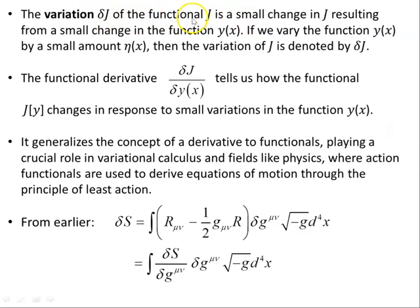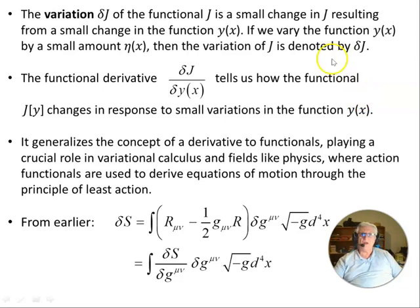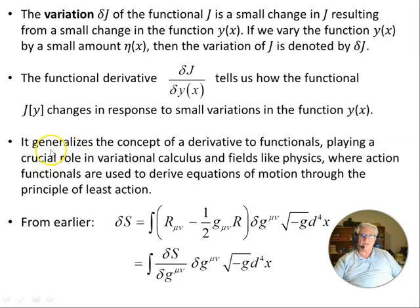The variation δJ of the functional J is a small change in J resulting from a small change in the function y(x). If we vary y(x) by a small amount, the variation of J is denoted by δJ. The functional derivative δJ/δy(x) tells us how the functional J[y] changes in response to small variations in y(x). It generalizes the concept of derivative to functionals, playing a crucial role in variational calculus and fields like physics, where action functionals are used to derive equations of motion through the principle of least action.